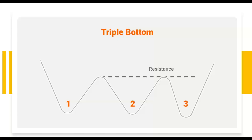Then we have a triple bottom. The pattern on that live chart was closer to a triple bottom. The more times it becomes a double bottom to a triple bottom, the more reliable it is. The more times it forms that top and the bottom, but you have to know that sooner or later it's going to break through the resistance or the support level.